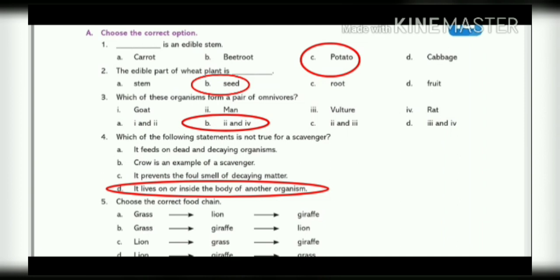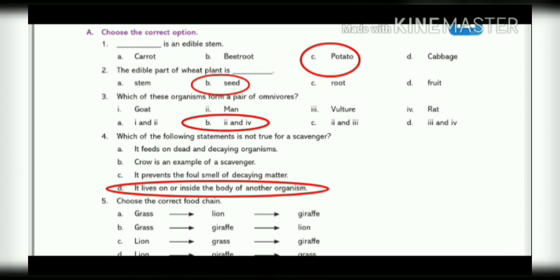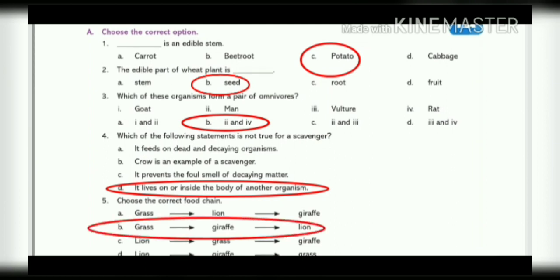It lives on or inside the body of another organism. Number 5. Choose the correct food chain. A. Grass → Lion → Giraffe. B. Grass → Giraffe → Lion. C. Lion → Grass → Giraffe. D. Lion → Giraffe → Grass. Answer is B.